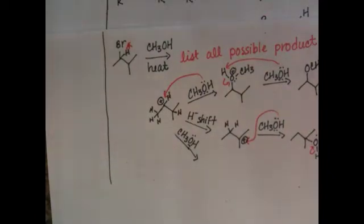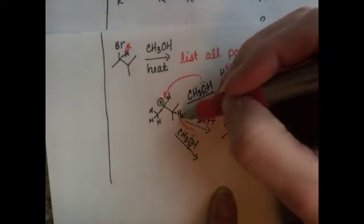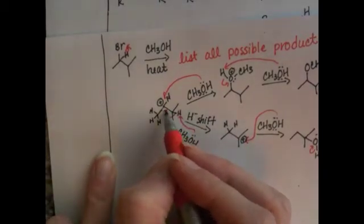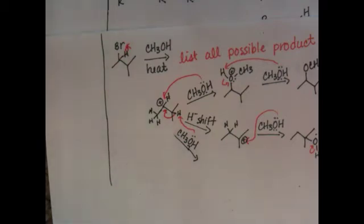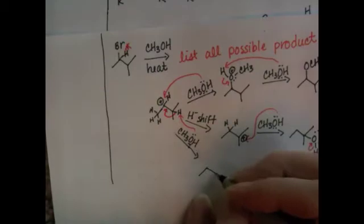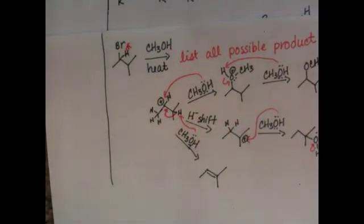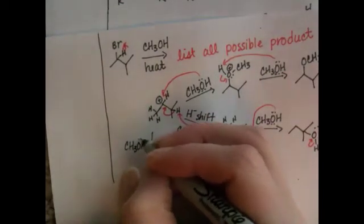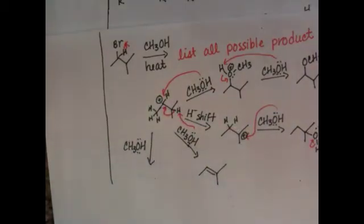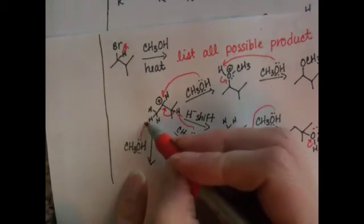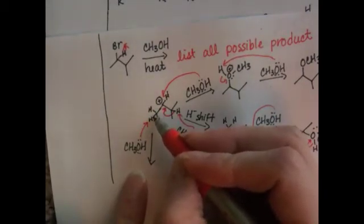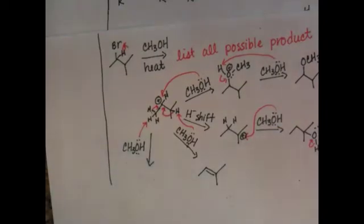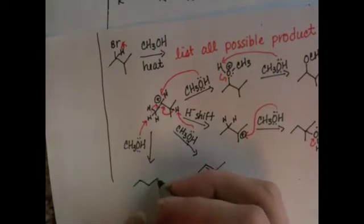So we're going to do them both. We'll just start with the one that's closest. We'll abstract this one first. The electrons from the carbon-hydrogen bond get moved over to the carbon-carbon bond and we end up with this alkene. We also have a possibility for the methanol to abstract from the other carbon. That's going to be pulling one of these hydrogens in, moving the carbon-hydrogen electrons into that spot. That will give us that product.